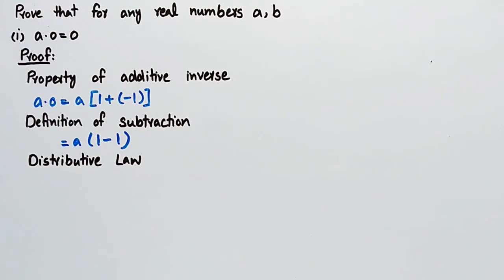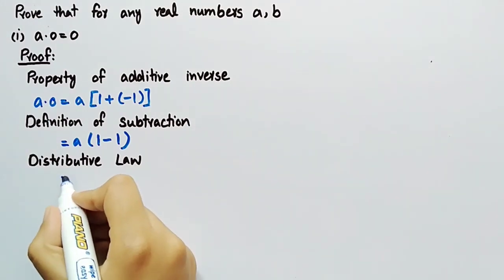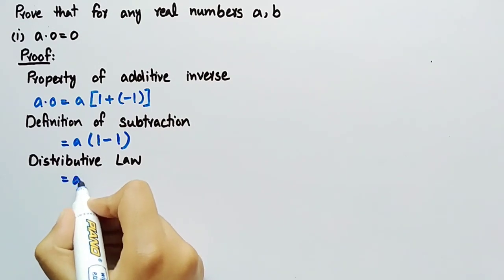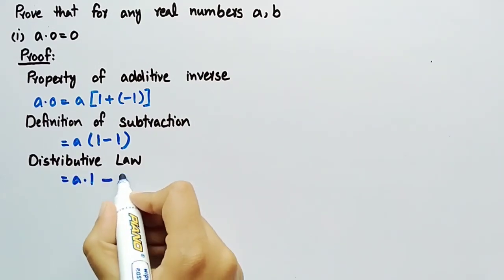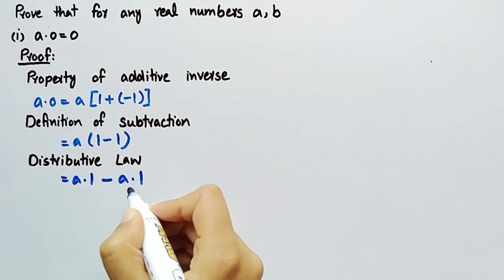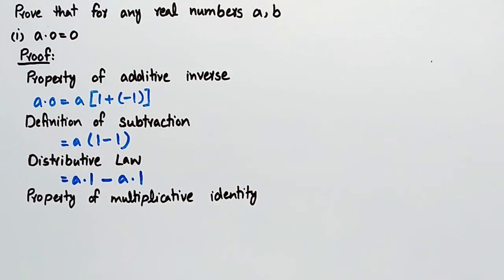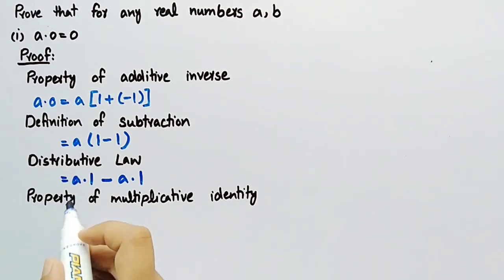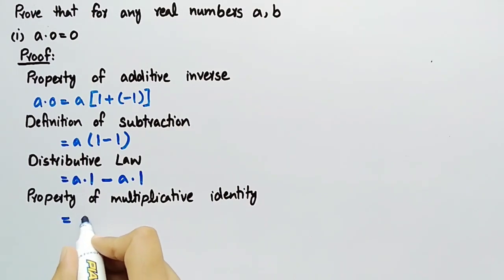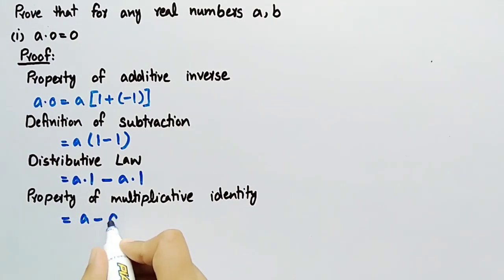By using the distributive law, we can write a·1 − a·1. From the property of multiplicative identity, a·1 can be written as equal to a. So, we get a − a.